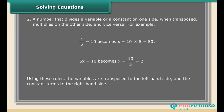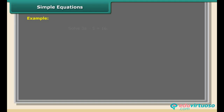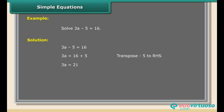Using these rules, variables are transposed to the left-hand side and constant terms to the right-hand side. Example — Solve: 3A − 5 = 16. Solution: 3A = 16 + 5 (transpose −5 to RHS); 3A = 21 (simplify RHS); A = 21/3 (transpose 3 to RHS); A = 7.